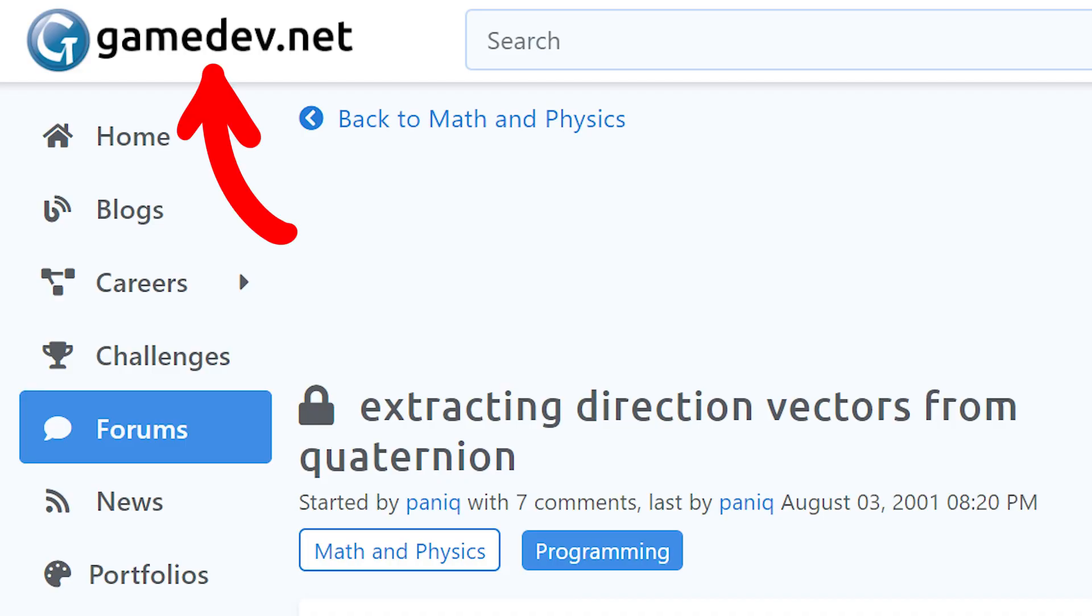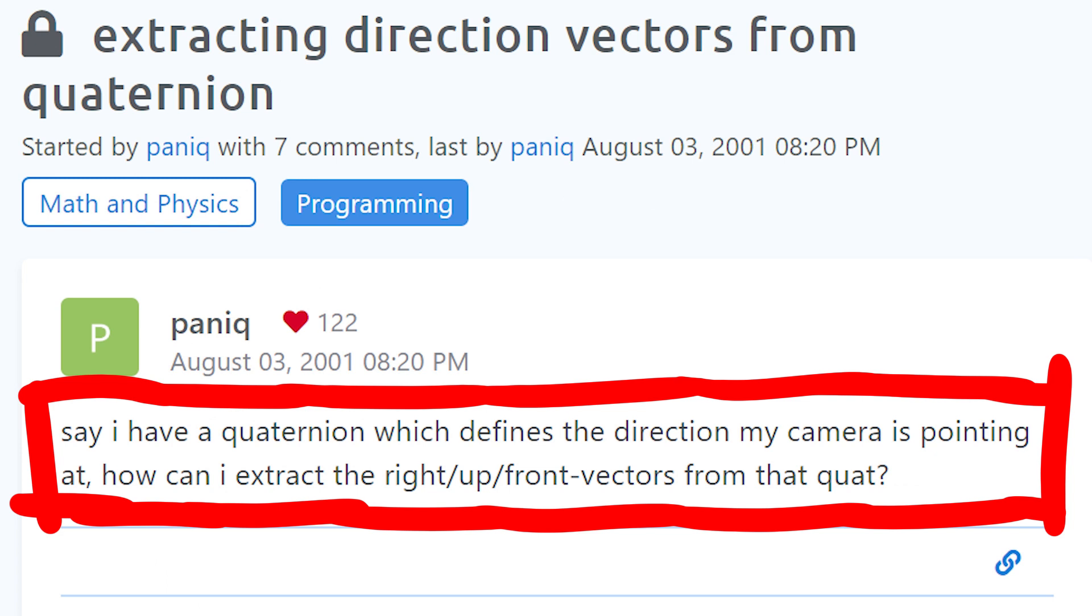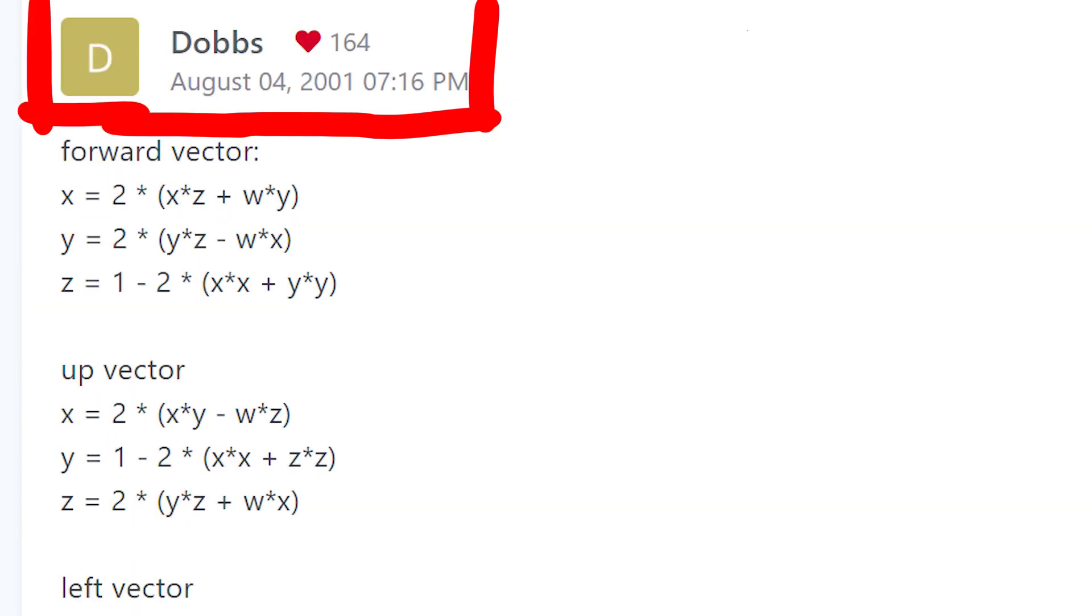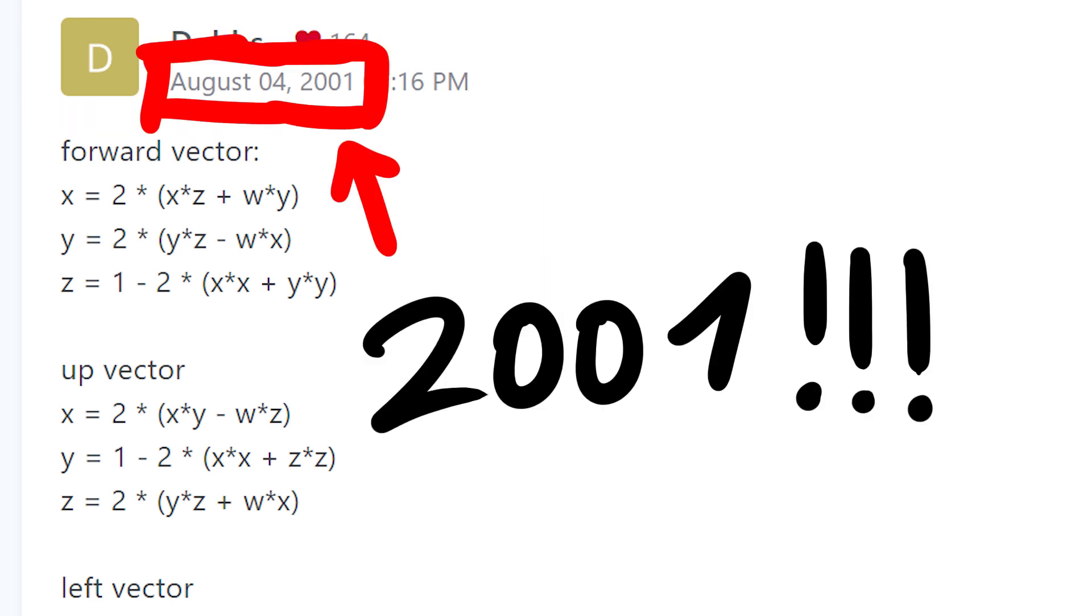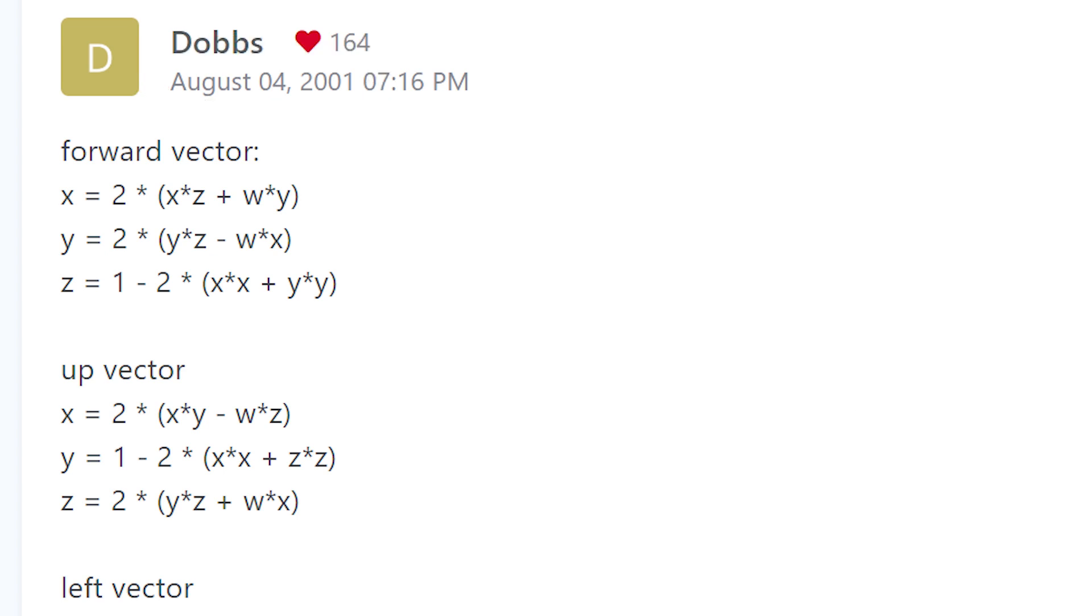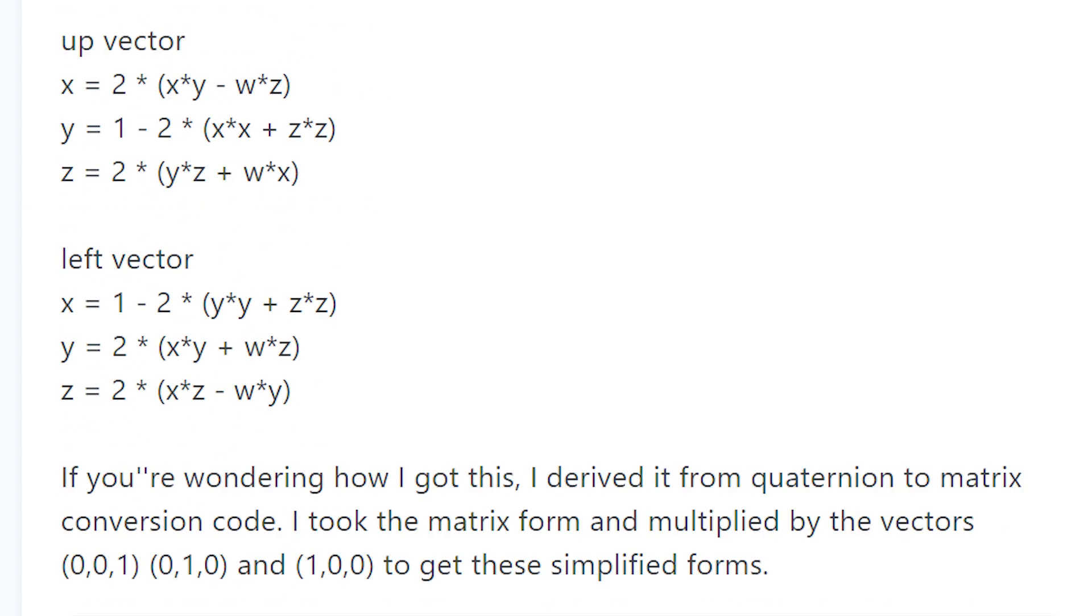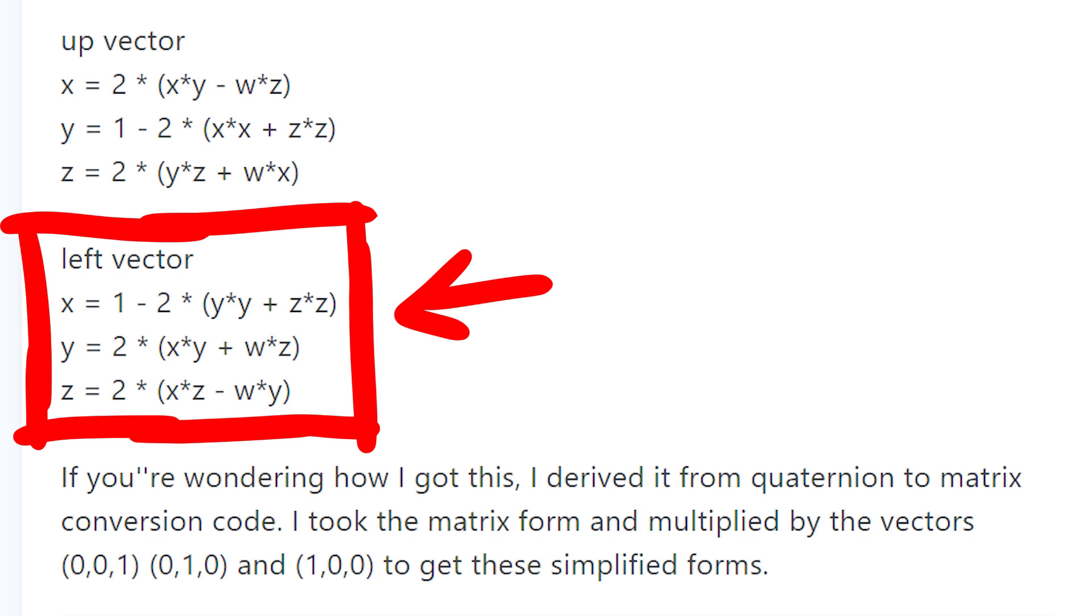Say I have a quaternion, which defines the direction my camera is pointing at. How can I extract the right up front vectors from that quaternion? And the user Dobbs responded with this. Oh, I just noticed this happened 18 years ago. 18 damn years. I was 10 years old when these mad lads were doing gamedev. I'm wondering where these people are today. Did they ever became game developers? Anyway. I tried out different formulas, and in the end the left vector worked. Left vector sounds probably weird, but we don't know what the base vector for the direction is used by the game engine. It doesn't matter. This works.